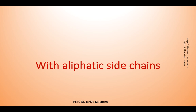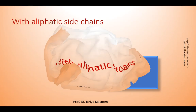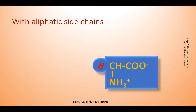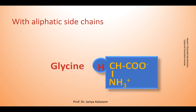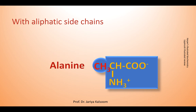Coming to the classification, first we will discuss the amino acids with aliphatic side chains. With the exception of glycine, the alpha carbon of every amino acid is chiral. If the R chain is a hydrogen atom, the amino acid is glycine. If the R chain is a methyl group, the amino acid is alanine.